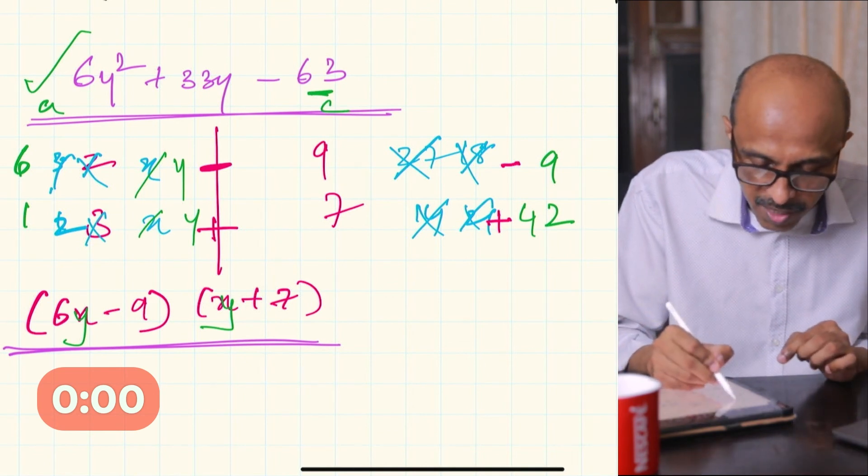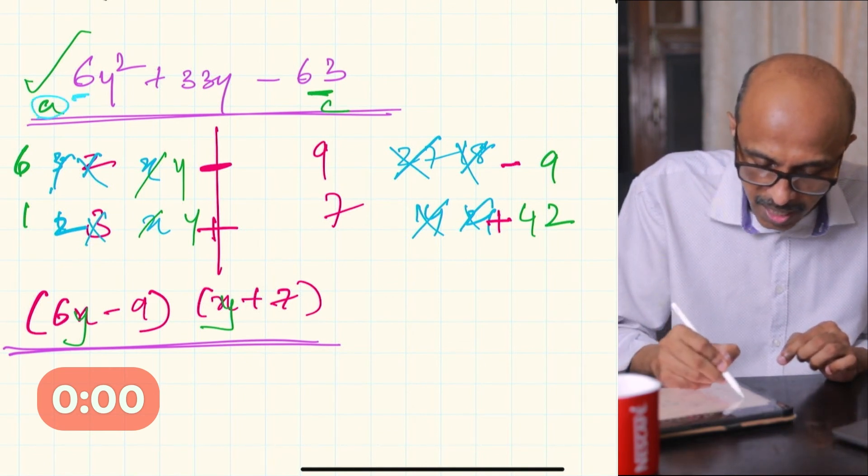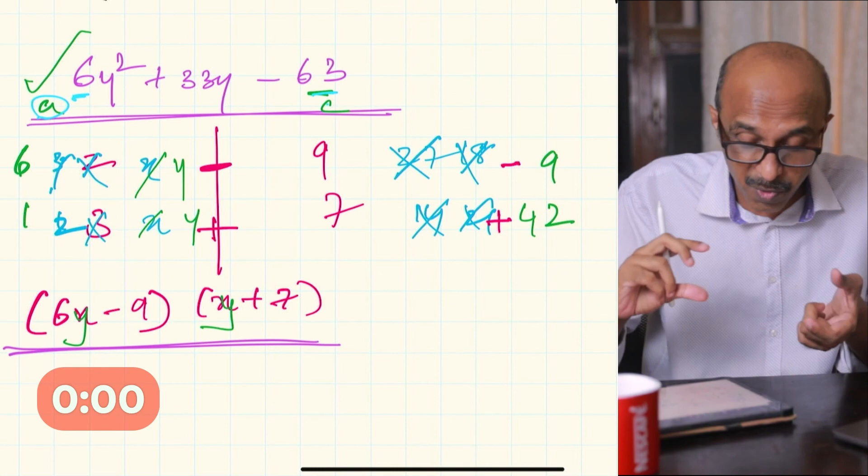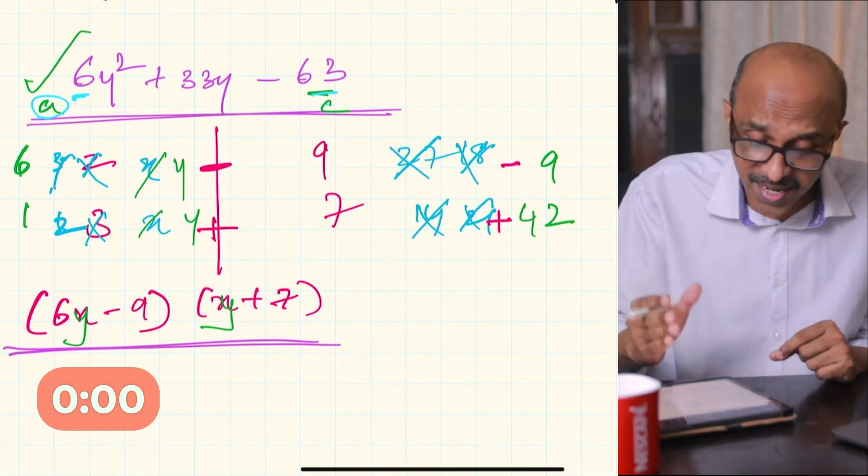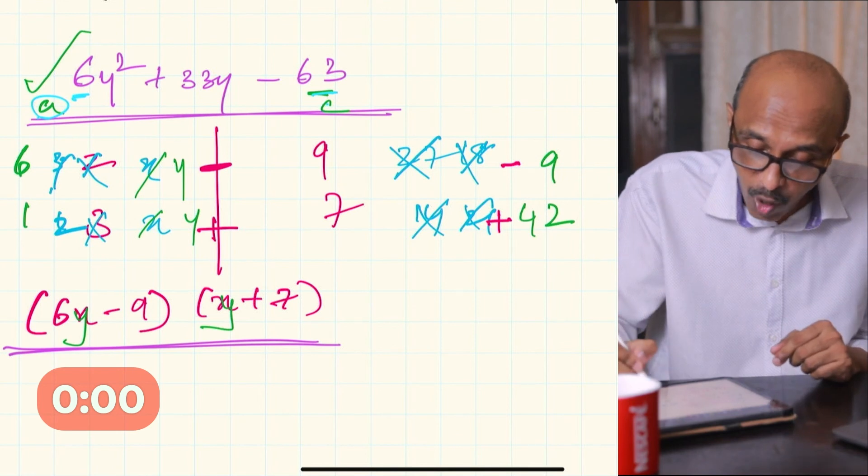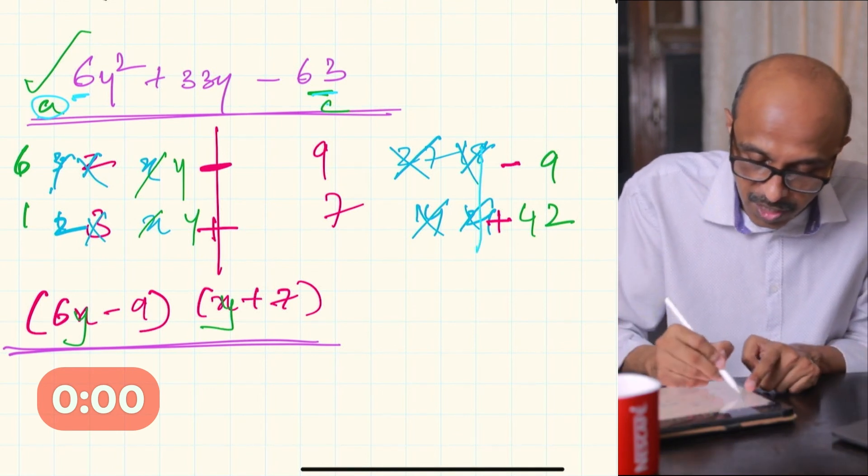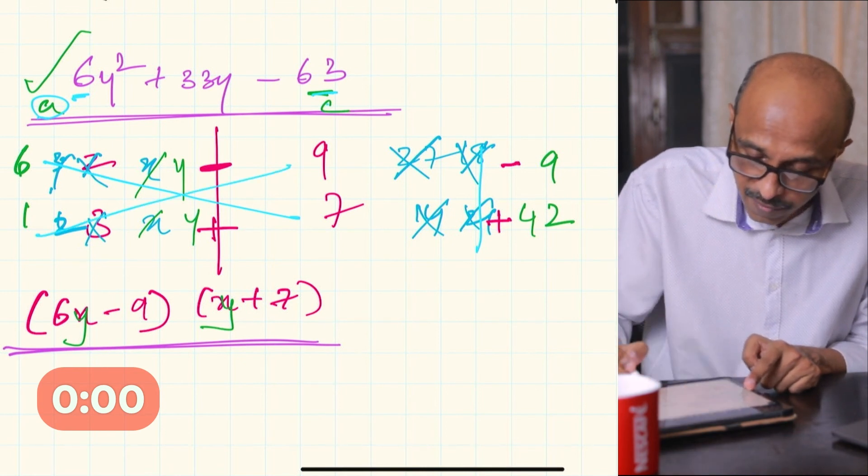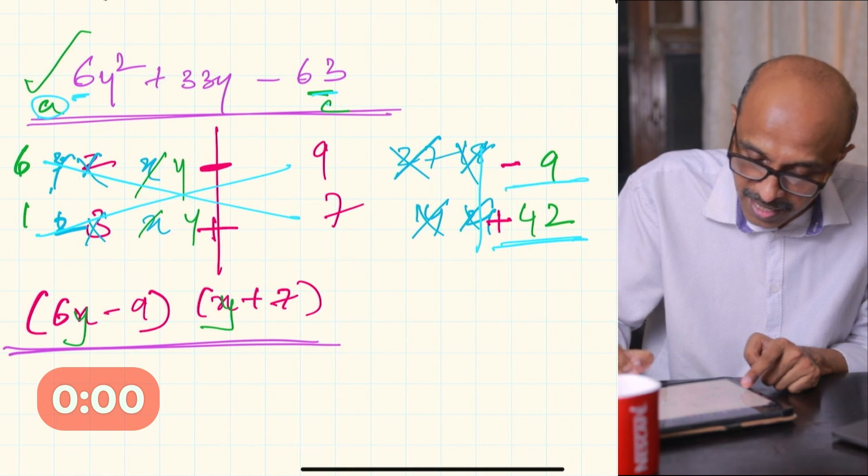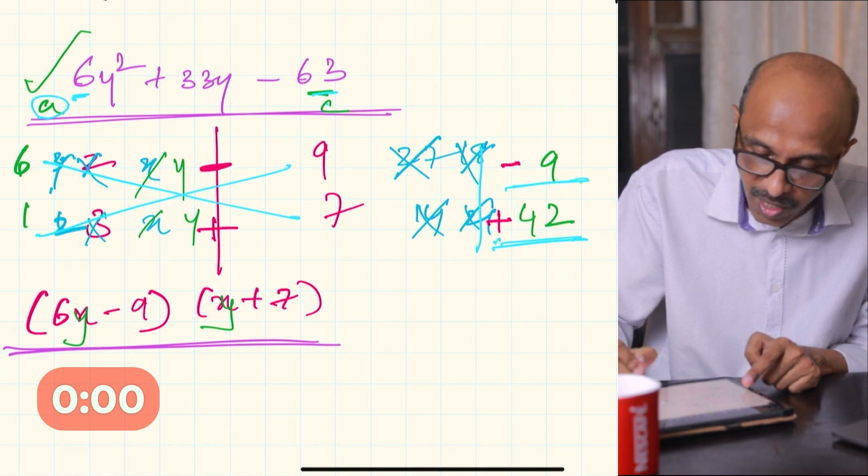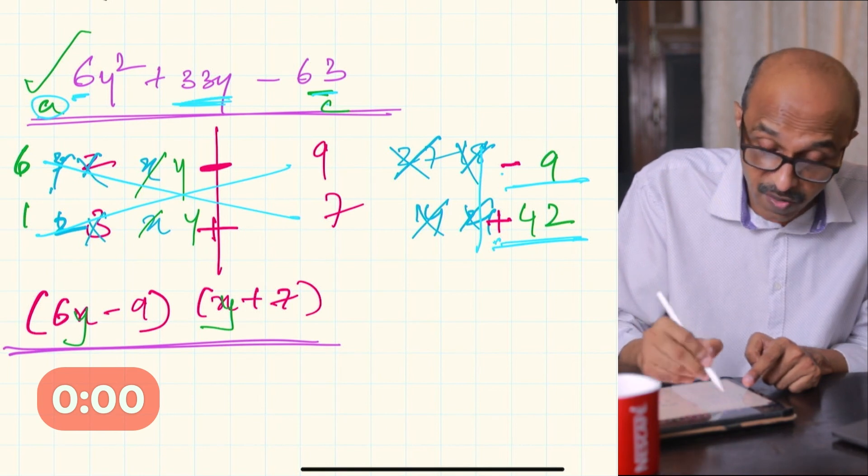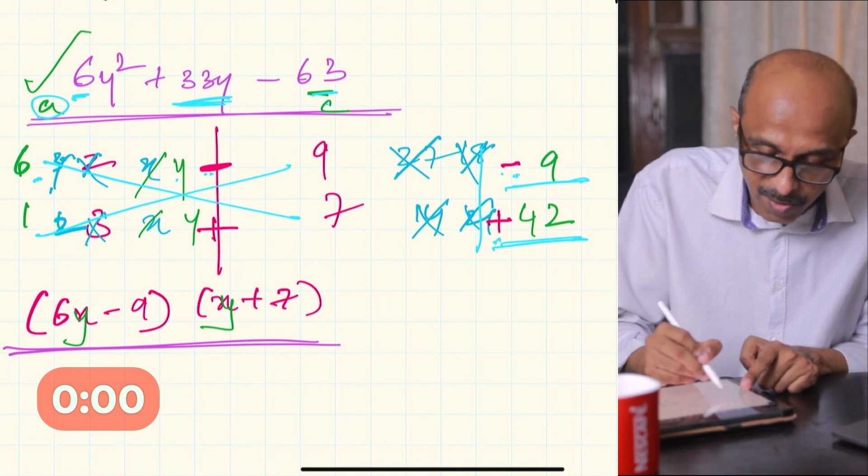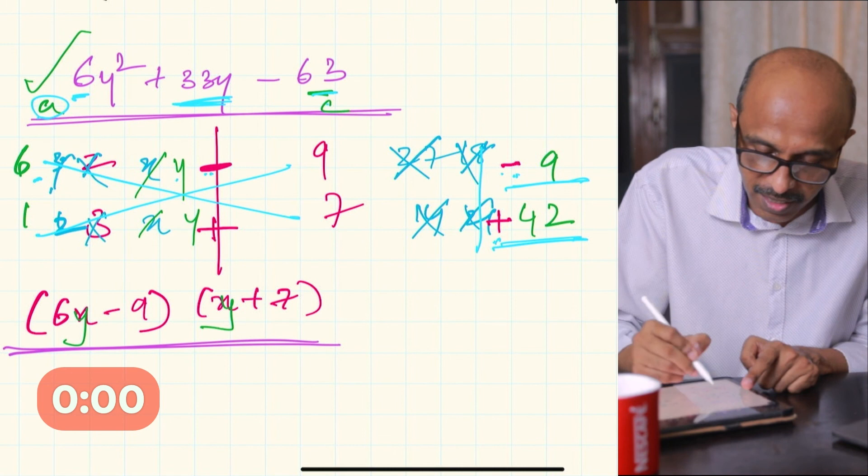Let's quickly recap this technique. First we write down the factors of a and the factors of c. Remember, the larger the number, there'll be many more factors and different combinations. Which is why I keep saying, get to know your multiplication tables. The combination that you get here from cross-multiplying, 6 times 7 is 42 and 1 times 9 is 9. With the correct sign, plus 42 and minus 9 gives you the middle term. That particular sign, you bring it out here. 6 times y make sure you put that variable here, whether it's x or t or whatever that is.